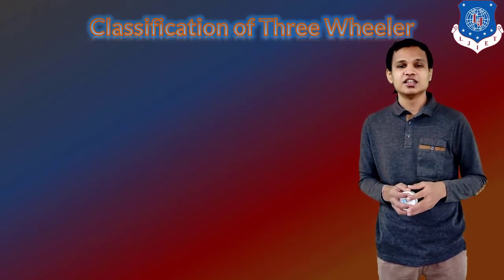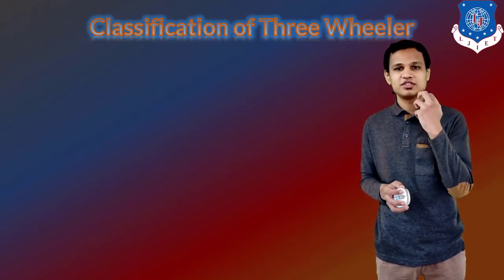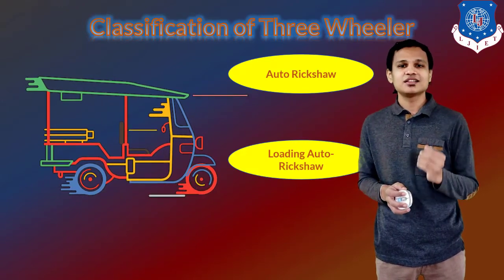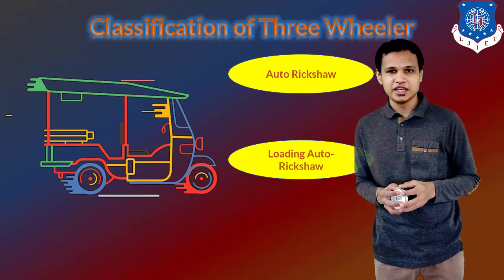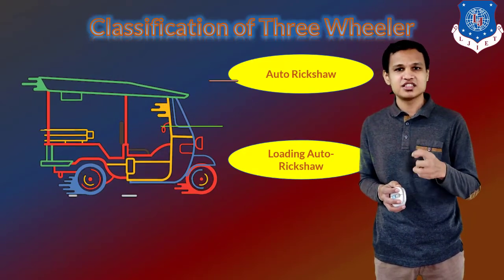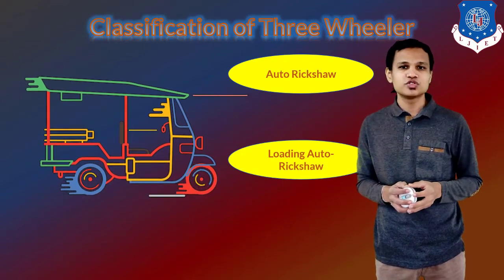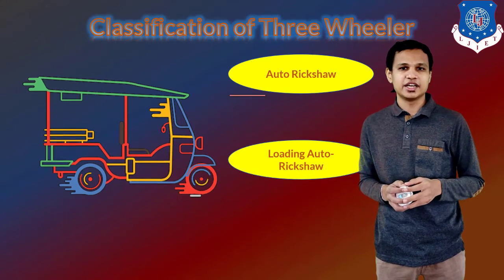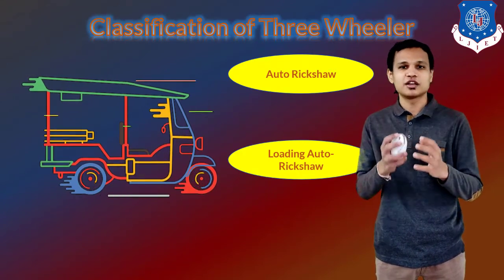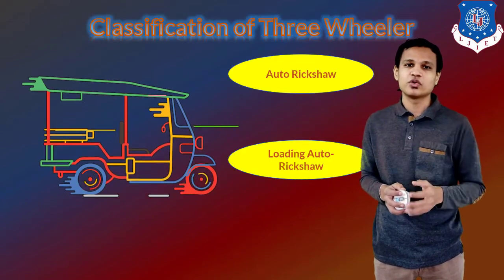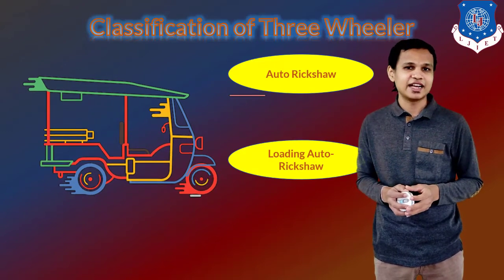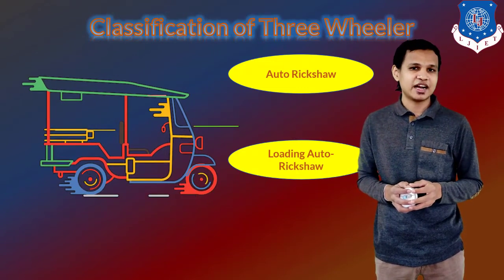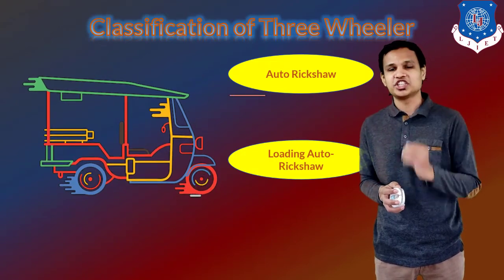Next is the classification of the three-wheeler. The first thing that will come to your mind is auto rickshaws. Auto rickshaws are the type of vehicle which use the three-wheeler system, mostly used for passenger transportation and widely used in India. The second type is loading auto rickshaws — for goods transportation, you might have seen tempos, which are also known as loading auto rickshaws and are used for the three-wheeler technology as well.